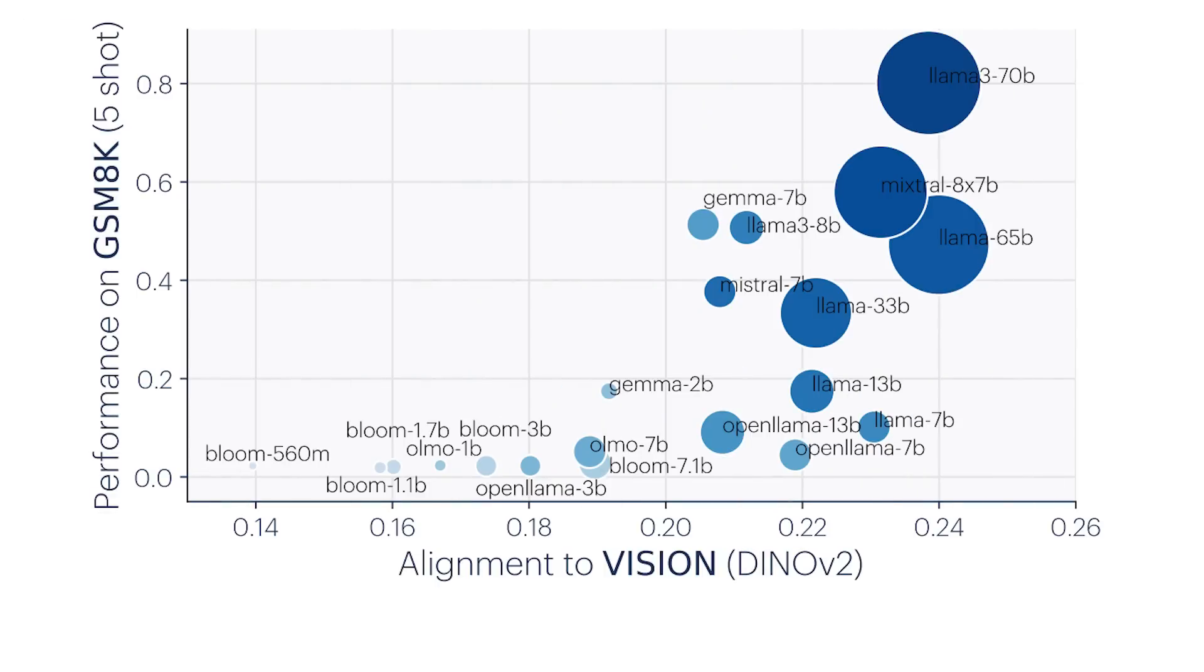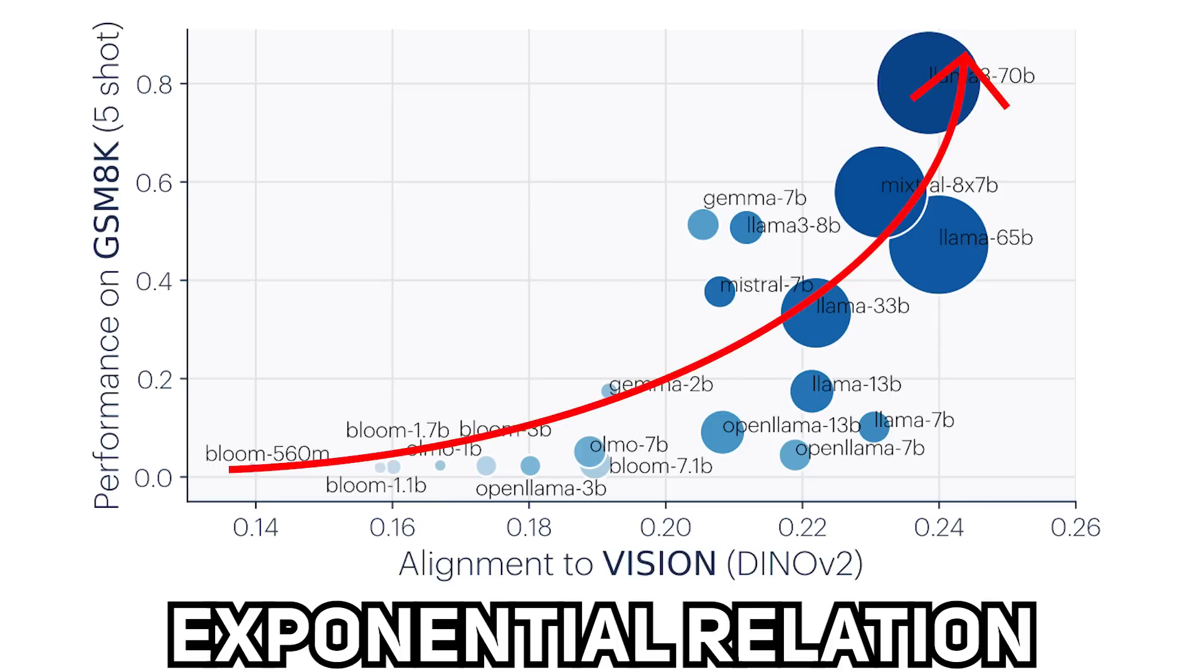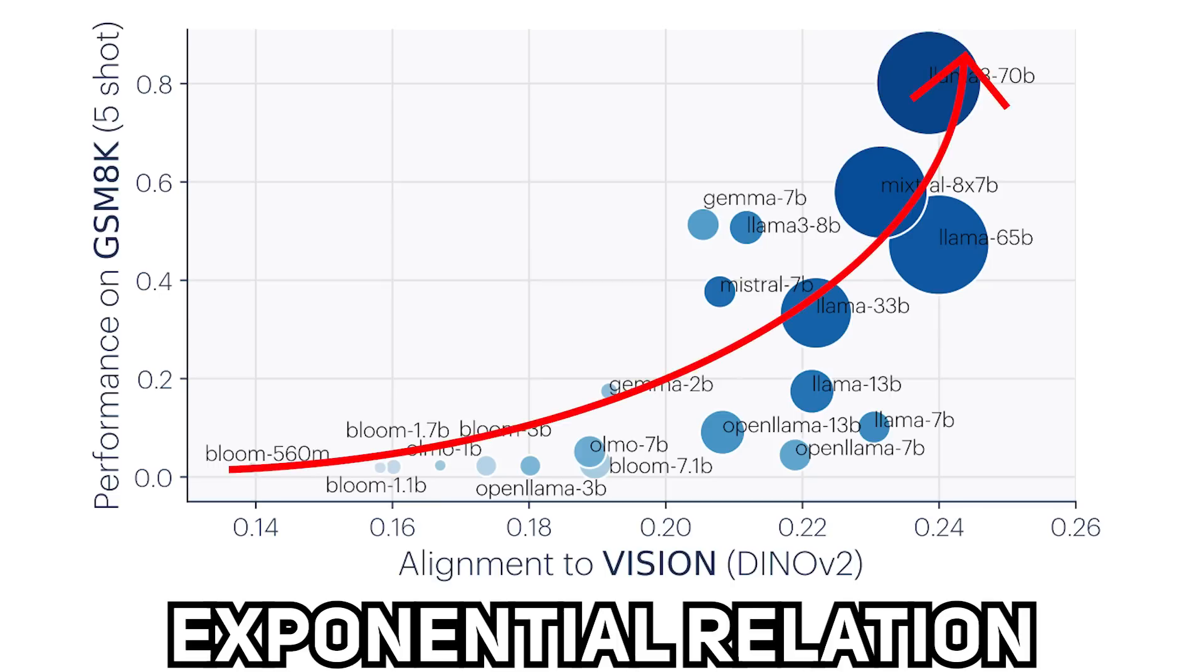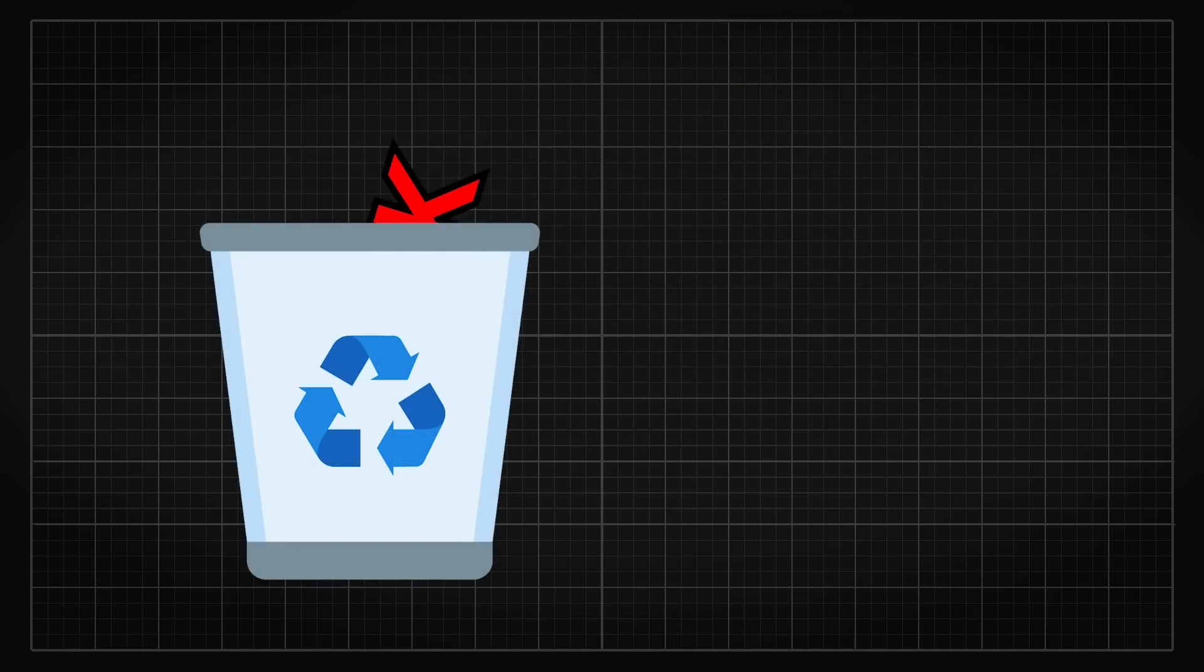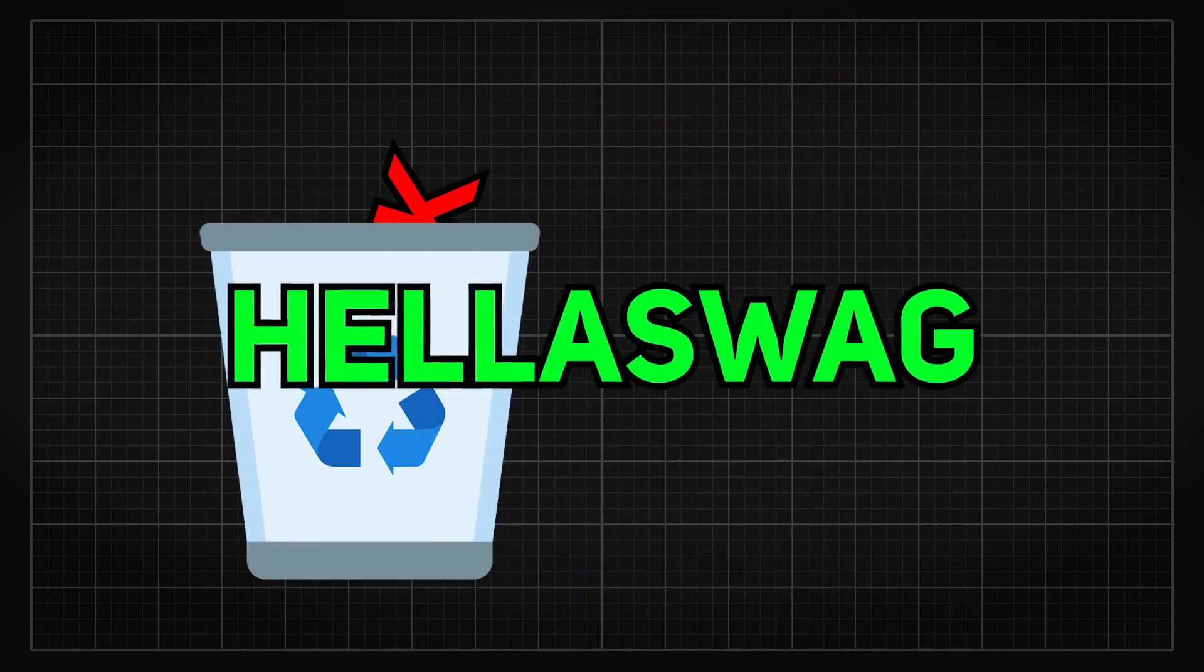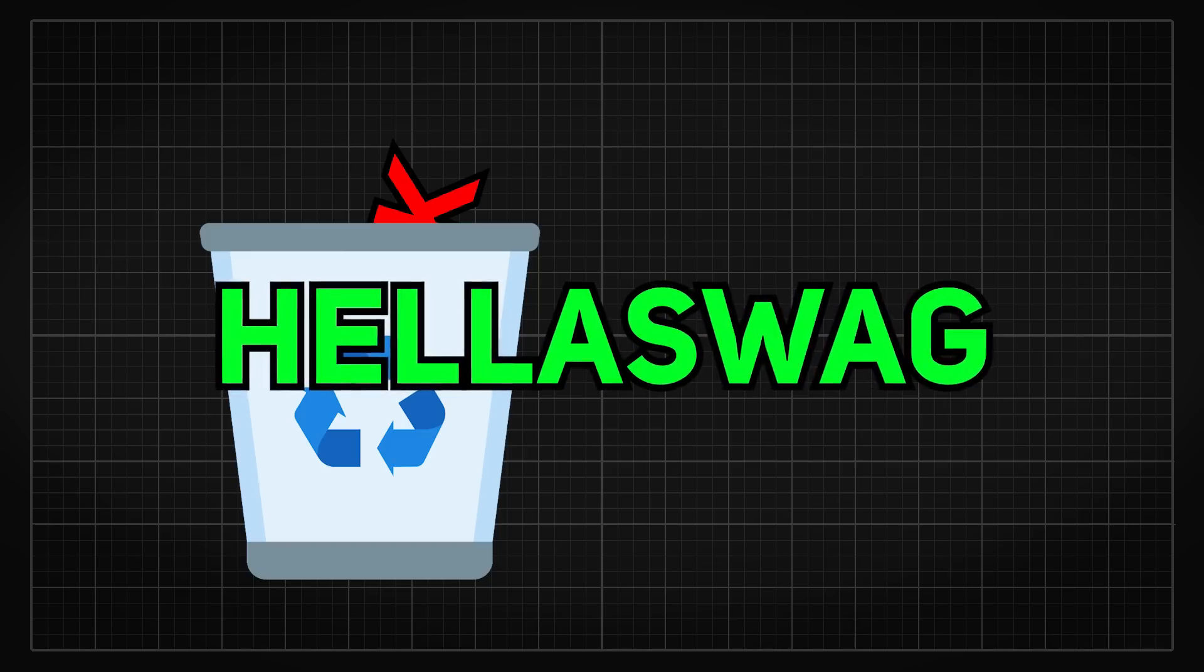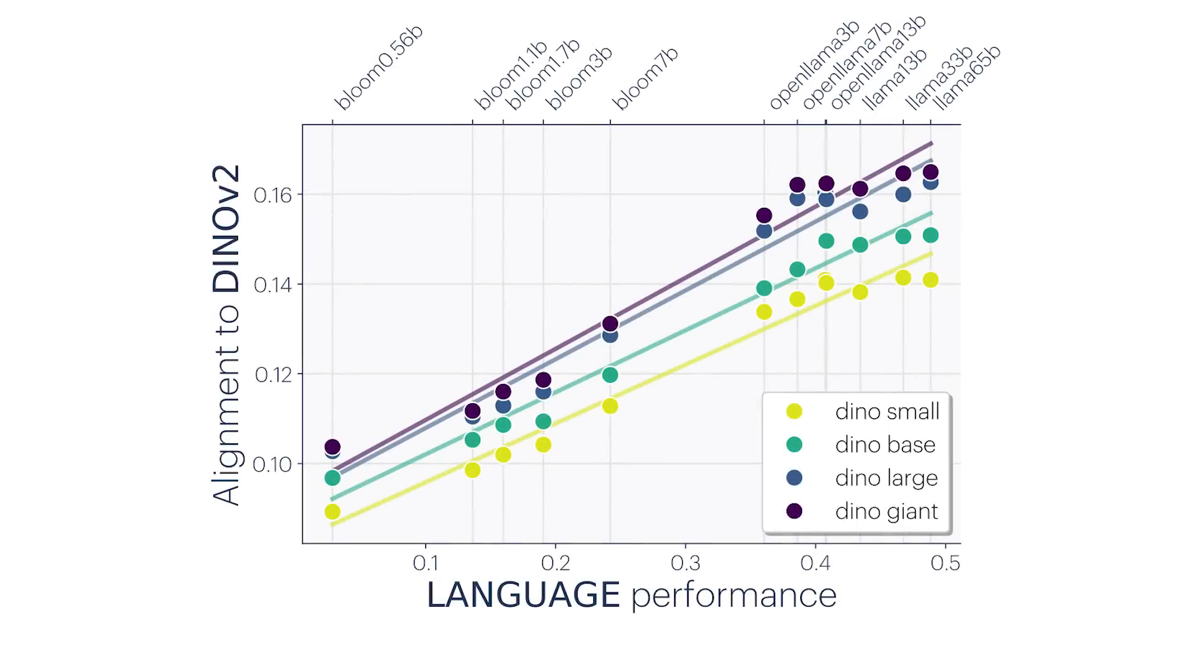On the other hand, when models are sorted by the math benchmark, it shows more of an exponential relation, which is also fascinating to see. This could mean that math doesn't really mean much in the representation space of the model, and common sense might have a stronger impact in building representations and relations within a model.